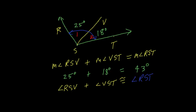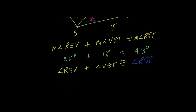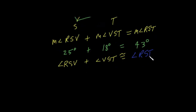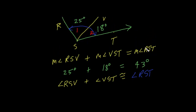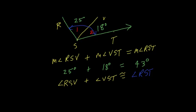Similar to the segment addition postulate, there's no great surprise here. We do ask you to make a distinction between the measure of the angles and the angles themselves, but beyond that it is as you would expect — the sum of the two smaller angles is congruent to the entire angle. That's it for now. If there's a topic you'd like us to present, please drop us a line at our website. Thank you for visiting, and we'll see you in the next video.